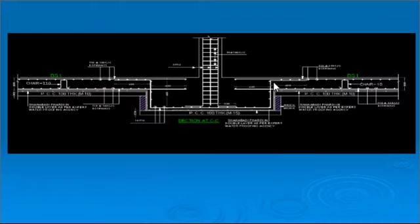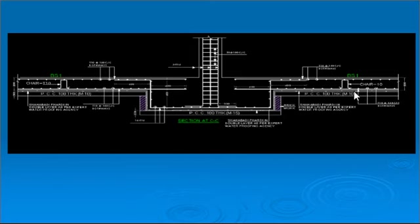The next detailing is for pad footing merged with raft or mat foundation. Since the column is subjected to heavy loads and the thickness of the raft alone is not sufficient, it is necessary to increase the thickness near the vicinity of the column while the thickness of the raft in the main portion can be reduced. This shows the detailing of a raft foundation combined with a pad foundation merged into it.